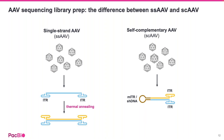Using PacBio HiFi reads, which are long and accurate, you have the ability to sequence the entire AAV vector from end to end. The AAV protocol is simple and flexible — both single-stranded and self-complementary AAV vector genomes can be sequenced. The basis of the protocol is to isolate the vector DNA, ligate SMRTbell adapters to double-stranded DNA, and sequence on the Sequel IIe system. To make a SMRTbell library requires double-stranded DNA with blunt ends. If the sample contains single-stranded AAV, an extra strand-annealing step is required where a plus-strand genome anneals to a minus-strand genome.